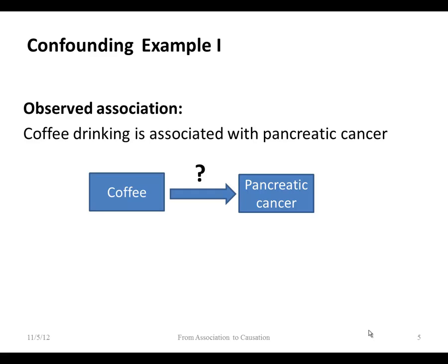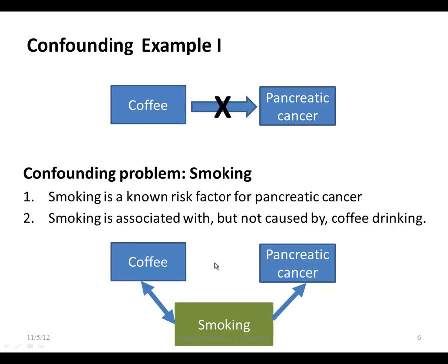Let's make this concrete. You have an observed association between coffee drinking and pancreatic cancer and want to know if it's causal. Smoking might be a confounder. Does it meet the two criteria? Is it a known risk factor for pancreatic cancer? Yes. Is it associated with, but not caused by, coffee drinking? Yes — people who are more likely to smoke are also more likely to drink coffee, but neither is causal for the other. So the observed relationship from coffee to pancreatic cancer is confounded by smoking.